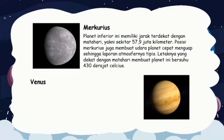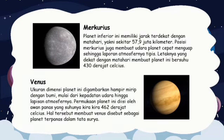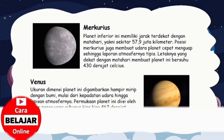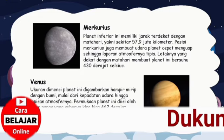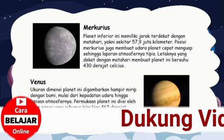2. Venus. Ukuran dimensi planet ini digambarkan hampir mirip dengan bumi, mulai dari kepadatan udara hingga lapisan atmosfernya. Permukaan planet ini diisi oleh awan panas yang suhunya kira-kira 462 derajat Celsius. Hal tersebut membuat Venus disebut sebagai planet terpanas dalam tata surya.